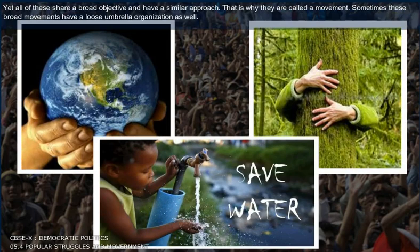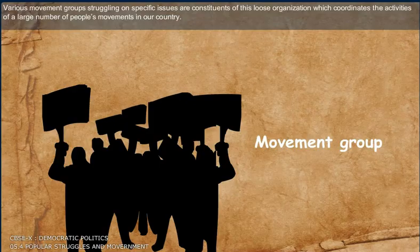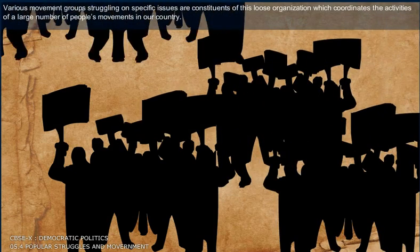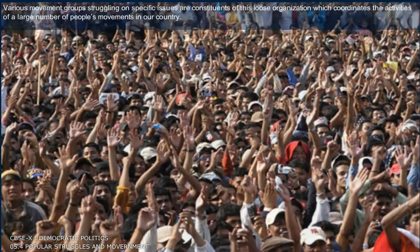Sometimes these broad movements have a loose umbrella organization as well. For example, the National Alliance for People's Movement is an organization of organizations. Various movement groups struggling on specific issues are constituents of this loose organization, which coordinates the activities of a large number of people's movements in our country.